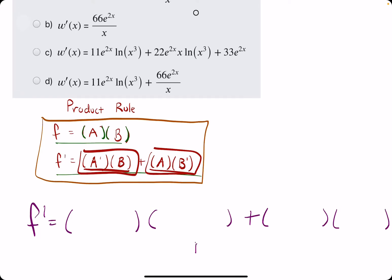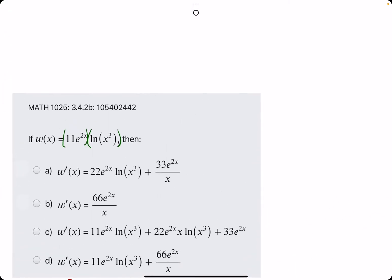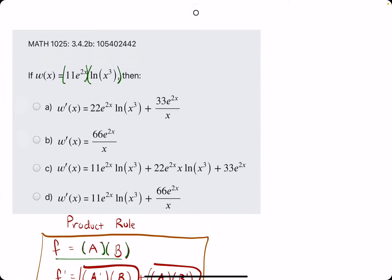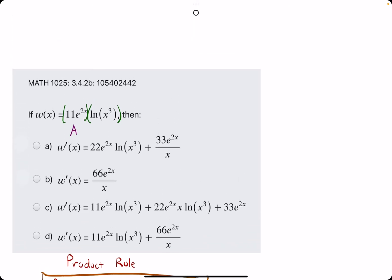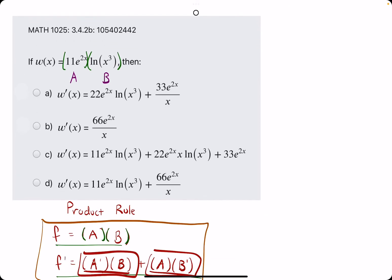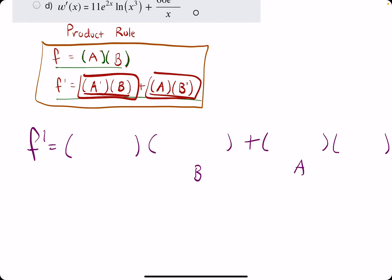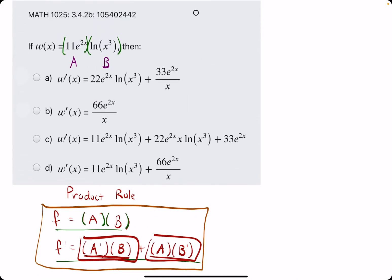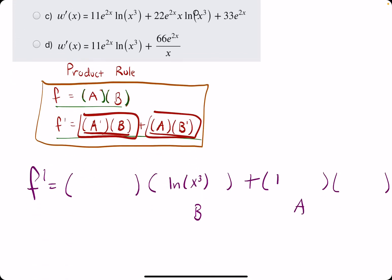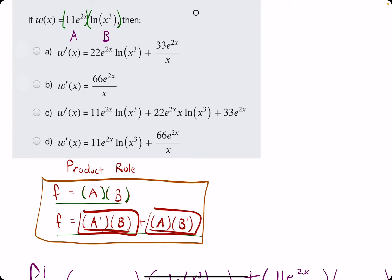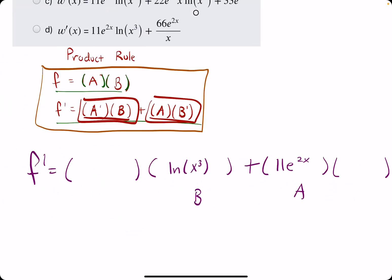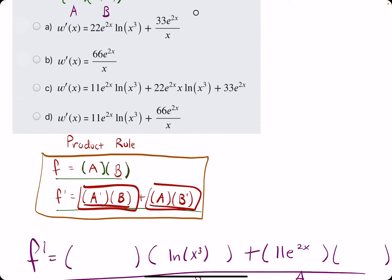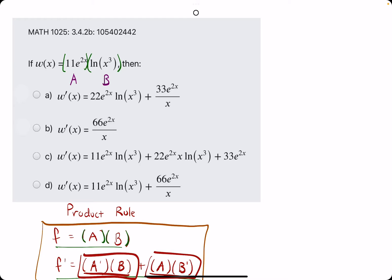f prime, we will start by doing a prime times b plus a times b prime. So, what we can do, since b is here and a is here, we can just go ahead and fill those in. And we'd have half of our answer done right off the bat. Keep in mind, a is the first half, B is the second half. B is ln of x cubed. And then, a is 11e to the 2x. So, we already have half of our answer done, which is convenient.